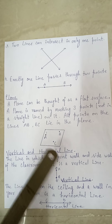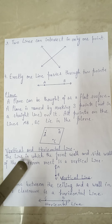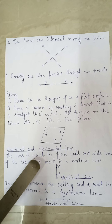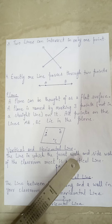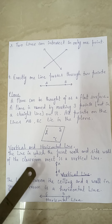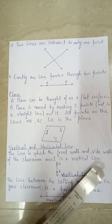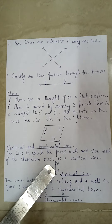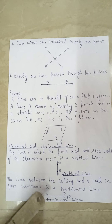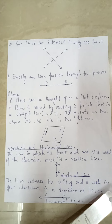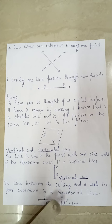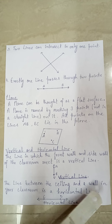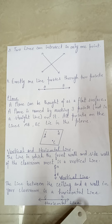In a plane, the points do not lie on the same line. The next heading is Vertical and Horizontal Lines. The line where the front wall and side wall of a classroom meet is a vertical line. The line between the ceiling and a wall in your classroom is called a horizontal line.